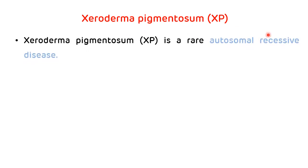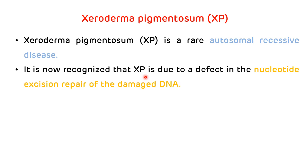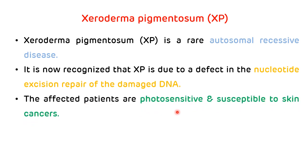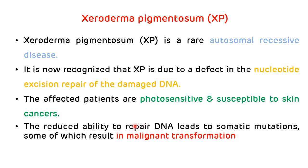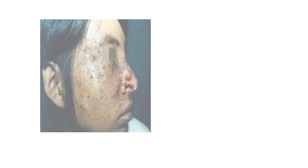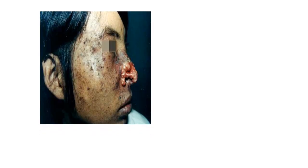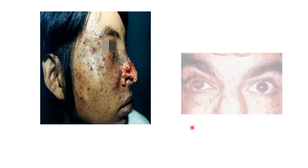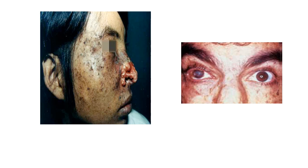An important applied aspect associated with nucleotide excision repair is xeroderma pigmentosum. It is a rare autosomal recessive disease occurring due to a defect in nucleotide excision repair of damaged DNA. Affected patients are photosensitive and susceptible to skin cancers. The reduced ability to repair DNA leads to somatic mutations, some of which result in malignant transformation. This picture shows patients with xeroderma pigmentosum who exhibit increased photosensitivity and vulnerability to skin cancers.